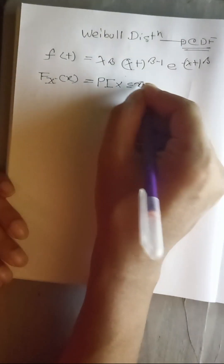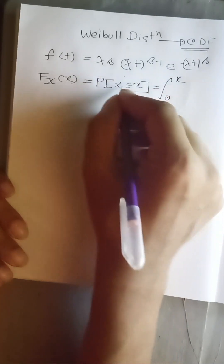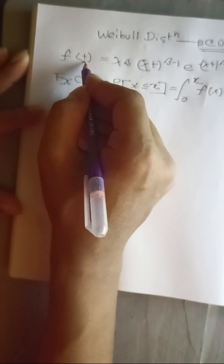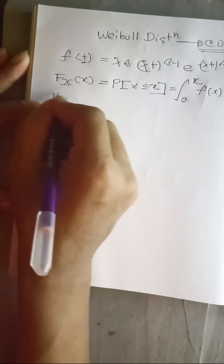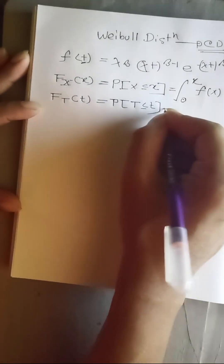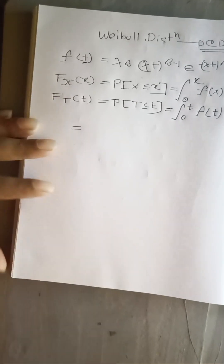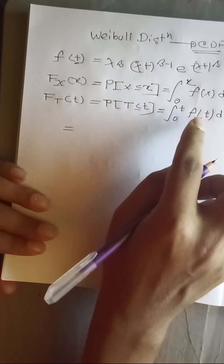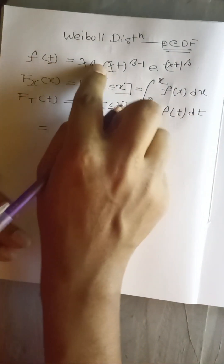We are finding the CDF. As we know, the formula for the CDF of any random variable — suppose X — is denoted as the probability P(X ≤ x), which can be written as the integral from 0 to x of f(x) dx. Our given formula has random variable t, so we write F(t) = P(T ≤ t) = integral from 0 to t of f(t) dt.